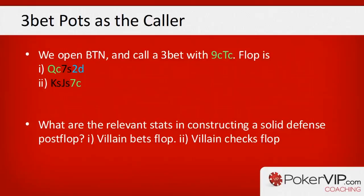Again we check the flop c-bet frequency, but now we can also look at 'fold flop c-bet to raise.' If he's folding very frequently to raises, it may be profitable to raise. But this isn't the only factor — we also look ahead at the turn stats. An interesting stat here is how often our opponent folds to the turn barrel after he bet-called the flop. A common mistake is: if we see a player has a low fold c-bet to raise, we assume we shouldn't bluff-raise. But if he then has 80% fold-turn-after-bet-call-flop, we may still have a very profitable bluff-raise because the majority of our profit comes on the turn.